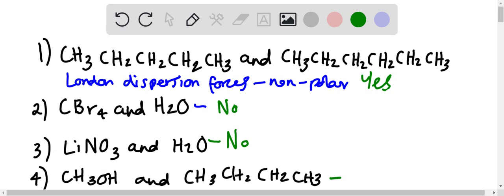So pair number one is the only one that can actually combine to form a homogeneous solution. This is because they're both non-polar and both have London dispersion forces, so they can combine.